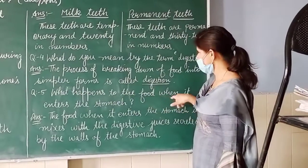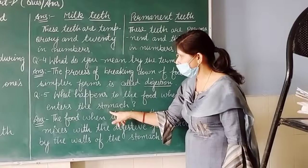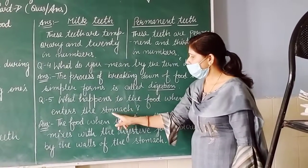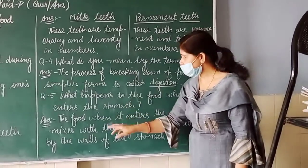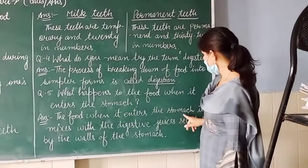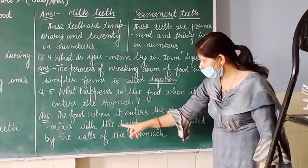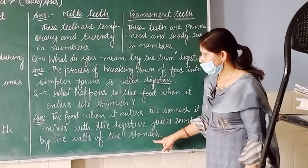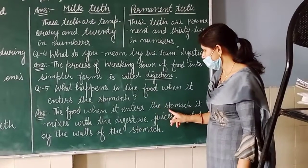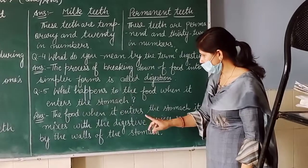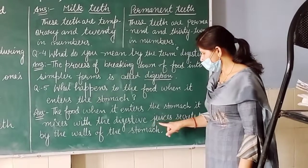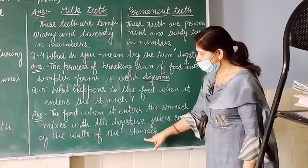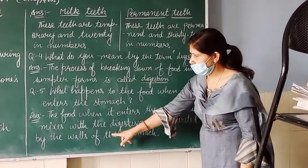Last question: what happens to the food when it enters the stomach? Khane ke saath kya hota hai jab woh stomach mein enter karta hai. The answer is: the food, when it enters the stomach, it mixes with the digestive juices secreted by the walls of the stomach. Digestive juices stomach ki walls se secrete hotay hain.